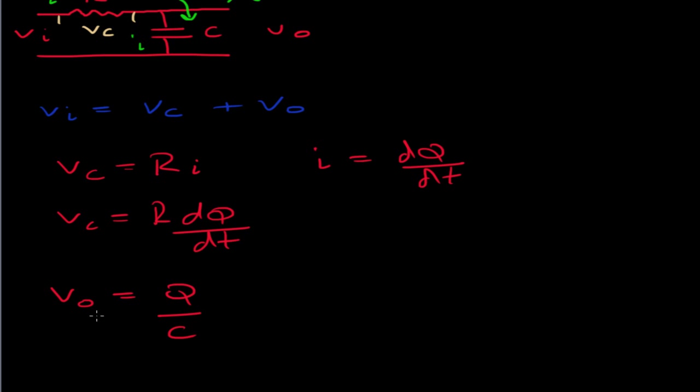Now, I can substitute V0 and VC into this voltage equation here. So I get VI now equals VC, which is R times DQ divided by DT, plus Q over C.